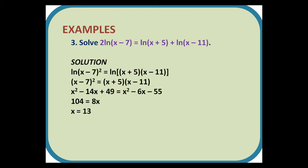Solution. We can put the coefficient of 2 as an index, so we get ln(x - 7)^2 on the left, and we can use the multiplication rule for our addition of logarithms, so we have ln[(x + 5)(x - 11)]. So we can get rid of the lns, and we have (x - 7)^2 = (x + 5)(x - 11). Multiplying out the brackets gives us x^2 - 14x + 49 = x^2 - 6x - 55. The x^2s cancel out, and when we rearrange we get 8x = 104, and hence x = 13.